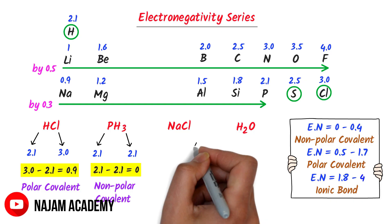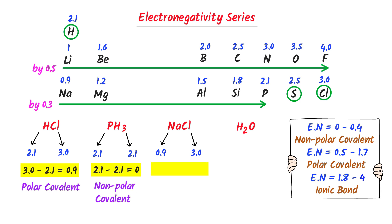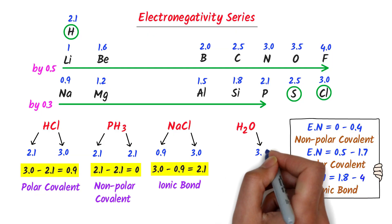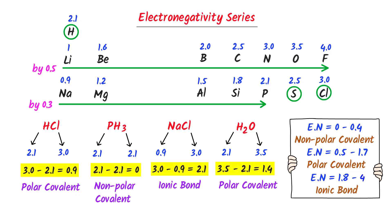Thirdly, the electronegativity of chlorine is 3.0 and sodium is 0.9, so 3.0 minus 0.9 equals 2.1 — the electronegativity difference is greater than 2, so it is an ionic bond. Lastly, oxygen is 3.5 and hydrogen is 2.1, so 3.5 minus 2.1 equals 1.4 — greater than 0.5, so it is a polar covalent bond. Thus, using this simple trick, we can easily calculate the electronegativity difference.